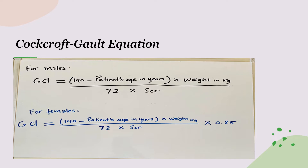The equation for males to calculate creatinine clearance is: 140 minus the patient's age in years, times weight in kilograms, divided by 72 times the serum creatinine. For females, the equation is the same — 140 minus the patient's age times weight in kilograms, divided by 72 times serum creatinine — but you multiply the whole thing by 0.85. An easy way to remember it: same equation as the male, just multiply by 0.85 for females.